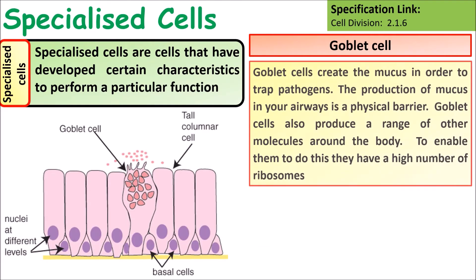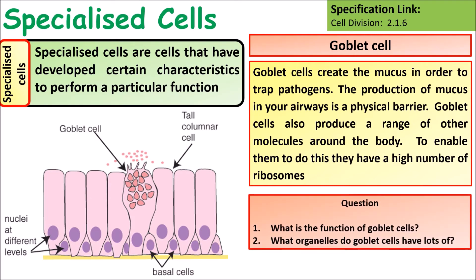A goblet cell is a cell that produces mucus and a range of other chemicals in the body. Goblet cells create mucus in order to trap pathogens, and the production of mucus in the airways forms a physical barrier. Think about the functions of goblet cells and what organelles they might need lots of to perform this function.